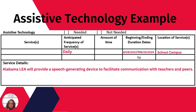Here's an example of assistive technology listed on the services page. You have your frequency of services, your duration days, and the location of the services. The service detail is also very specific about what assistive technology would be utilized for that particular student.